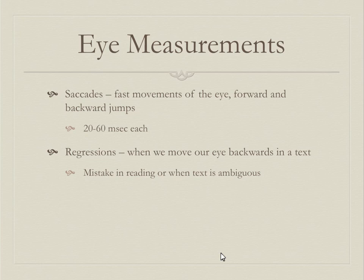If you are reading text and you go back to a word you misread or were unfamiliar with, that's called a regression — moving your eye backwards in the text. Sometimes the text is ambiguous. In dialogue where the speaker isn't labeled, you might back up to see who's speaking. Regressions generally happen when we've made a mistake in interpretation or when the text is ambiguous.